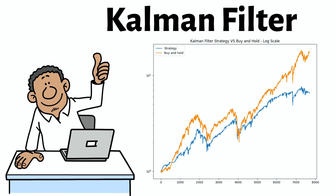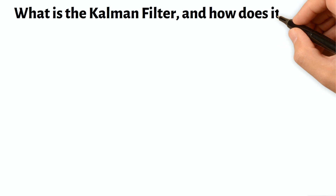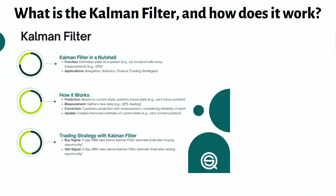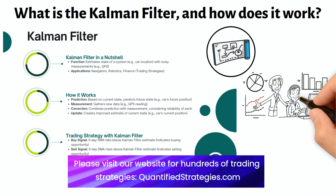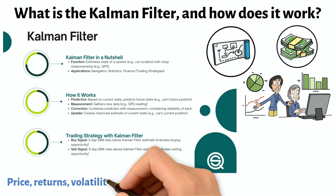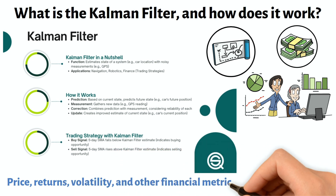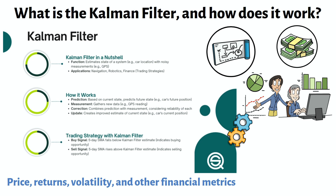Before we get to the strategy proper, let's introduce the Kalman filter. The Kalman filter is a mathematical algorithm for estimating the state of a system. In the trading world, it can be used to estimate and forecast the underlying trend in a financial instrument using observed market data. It helps filter out noise to provide more accurate estimates of an instrument's price, returns, volatility, and other financial metrics. It is like a smart tool that combines observed market data and your predictions to give a more accurate and smooth estimate of how the market is going to move in the near future.